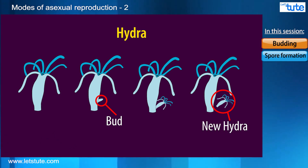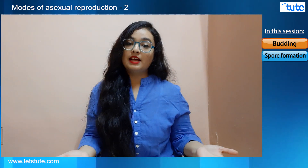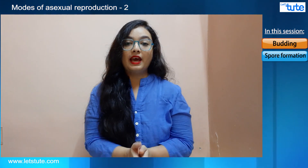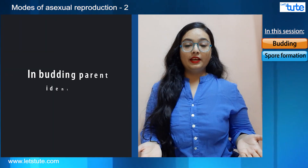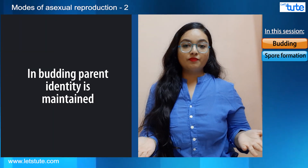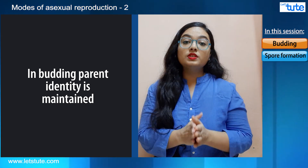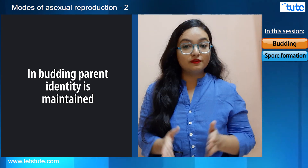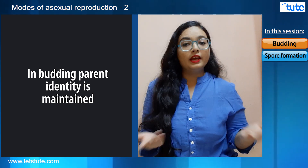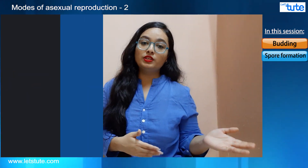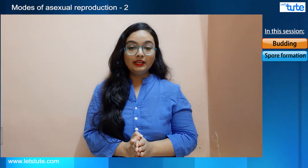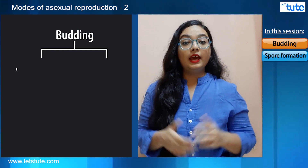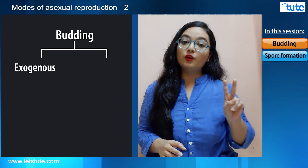After that, they detach from the parent body as a complete new individual. This is a very beautiful mechanism. In budding, the parent identity is maintained because the outgrowth or bud which is formed gets detached from the parent body and hence nothing of the parent body is lost, and hence the identity of the parent is maintained.